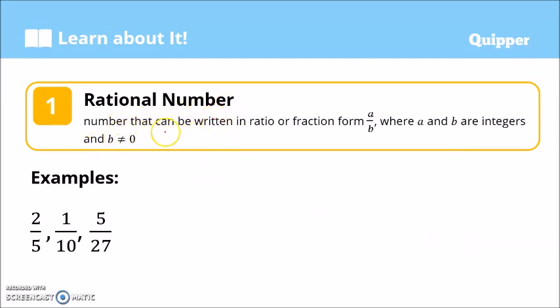Rational number is a number that can be written in ratio or fraction form, A over B, with a numerator and denominator. Where A and B are integers and B should not be equal to 0. Any number with a denominator of 0 is undefined, meaning that number does not exist. Examples of rational numbers are 2/5, 1/10, 5/27. These are commonly referred to as fractions.